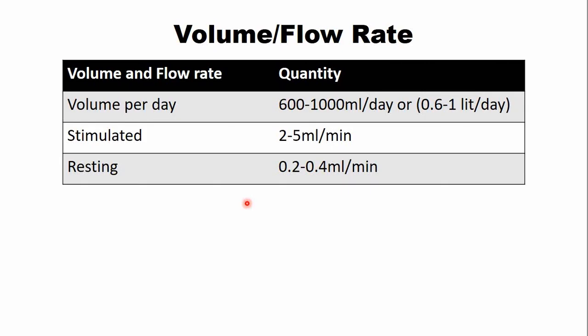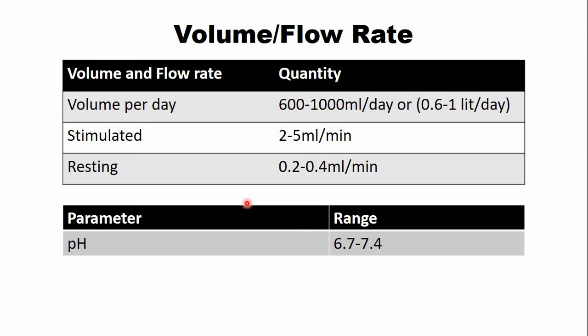What is the normal pH of saliva? The normal pH is around neutral, so the pH of saliva is 6.7 to 7.4.